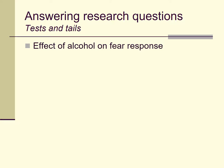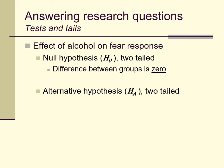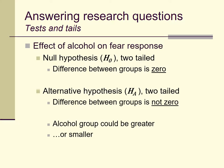Let's imagine we're looking at this effect of alcohol on fear response and our null hypothesis is tested with a two-tailed test. Here we're proposing that the difference between the groups is zero. Under a two-tailed approach, our alternative hypothesis is that the difference between the groups is not zero — it could be that the alcohol group has a greater fear response, or it could be that they have a lessened fear response. So the null says there is no difference, and the alternative says there is some non-zero difference, but it could go in either direction.